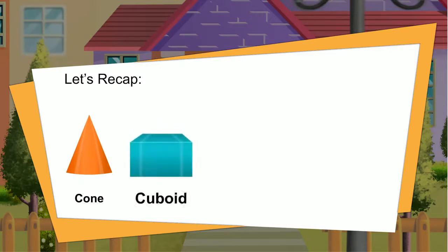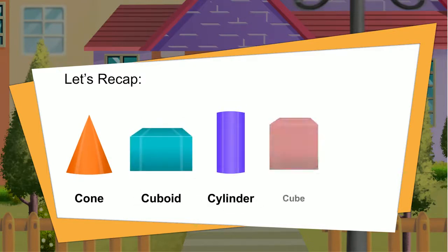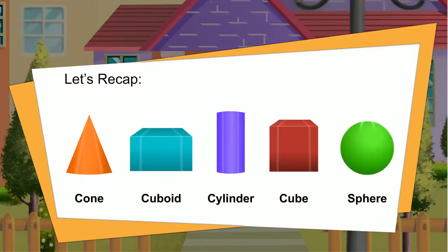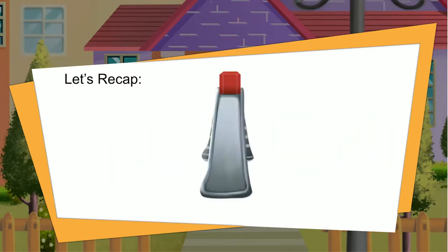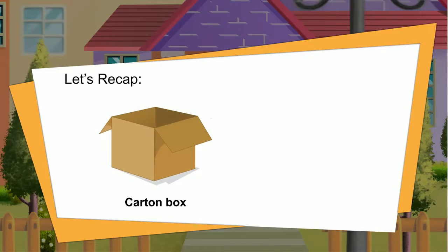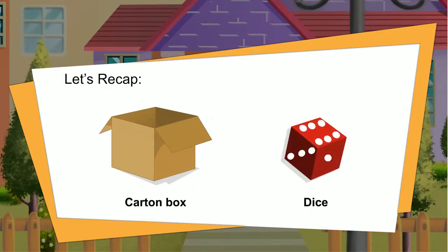Let's recap. Today we have seen solid objects which have their special names: cone, cuboid, cylinder, cube, and sphere. A cube can slide because it has flat faces. A carton box and a dice are all examples of cubes.